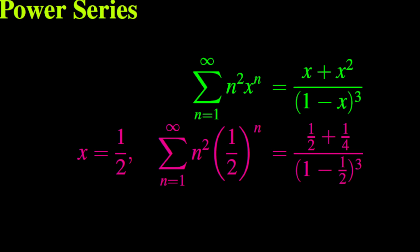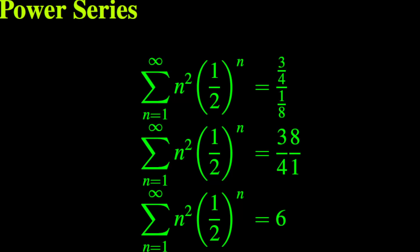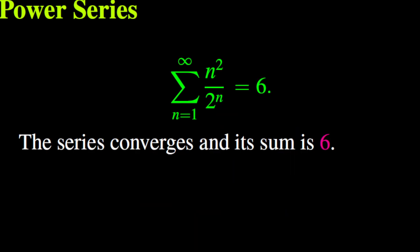We can now replace x by one half. This implies that the sum from n equals 1 to infinity of n squared times (1/2) to the power n equals the fraction (1/2 plus 1/4) divided by (1 minus 1/2) cubed. The numerator of the right-hand side is 3/4, and its denominator is 1/8. This means the sum equals 3/4 divided by 1/8, which simplifies to 6. We finally conclude that the series converges and its sum equals 6.